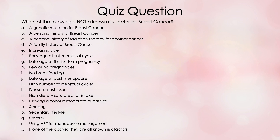Which of the following is not a known risk factor for breast cancer? A, a genetic mutation for breast cancer. B, a personal history of breast cancer. C, a personal history of radiation therapy for another cancer. D, a family history of breast cancer. E, increasing age. F, early age at first menstrual cycle. G, late age at first full-term pregnancy. H, few or no pregnancies. I, no breastfeeding.